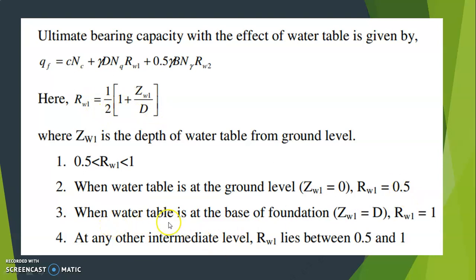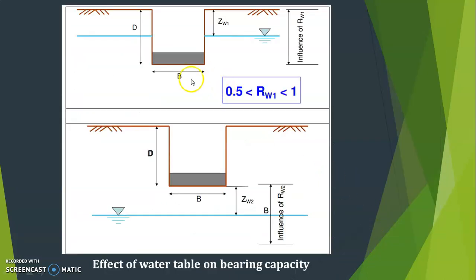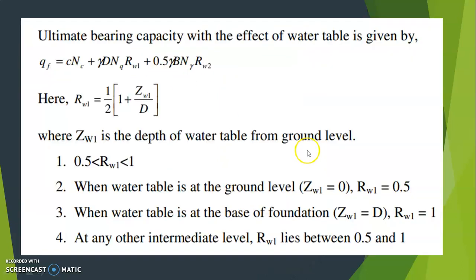When the water table is at the base of the foundation, z_w1 = D. Substituting: R_w1 = (1/2)(1 + D/D) = (1/2)(1 + 1) = (1/2)(2) = 1. At any other intermediate level, R_w1 lies between 0.5 and 1.